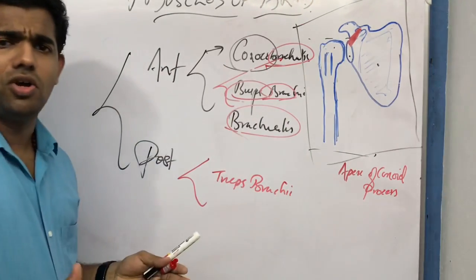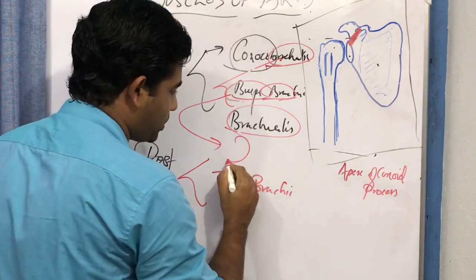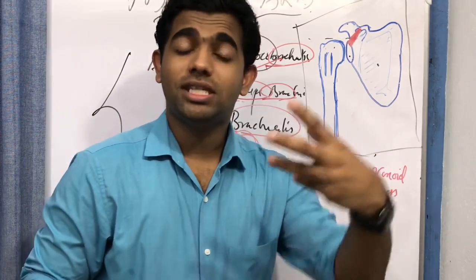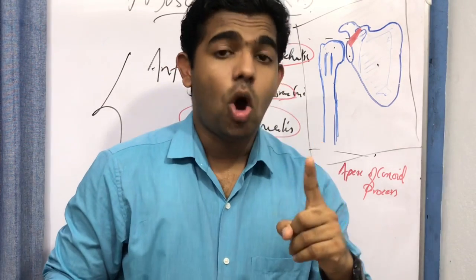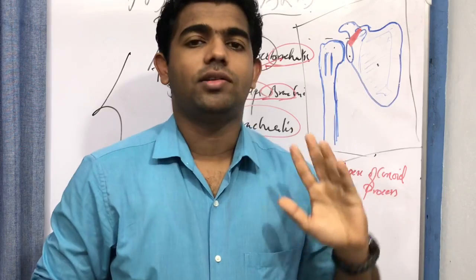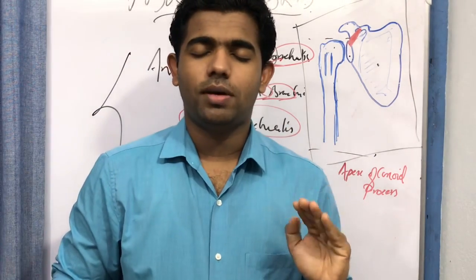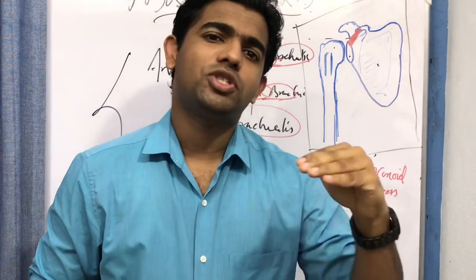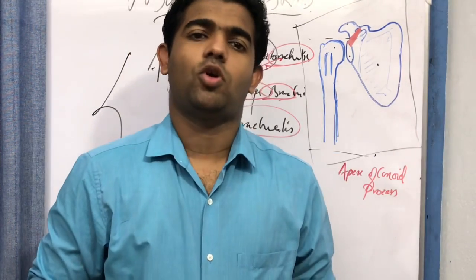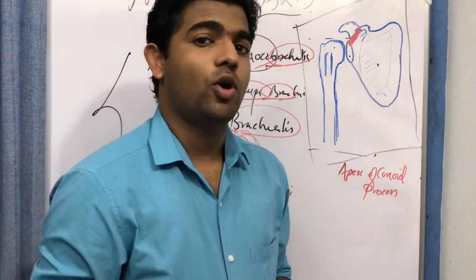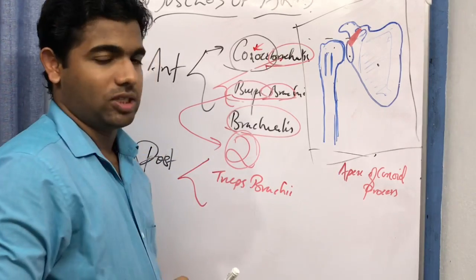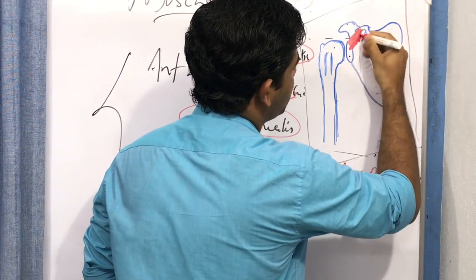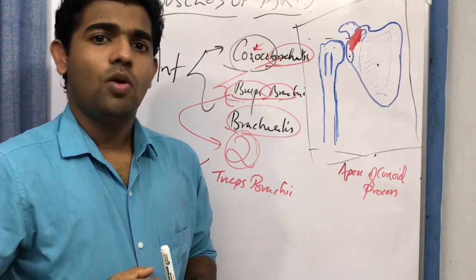Now, the origin of the biceps brachii: 'biceps' means two, so it is a two-headed muscle — bi means two, tri means three. It has a long head and a short head. The short head of the biceps brachii originates from the coracoid process, similar to the coracobrachialis. Just remember: wherever coracobrachialis originates — the coracoid process — the short head of the biceps brachii also originates from the coracoid process.